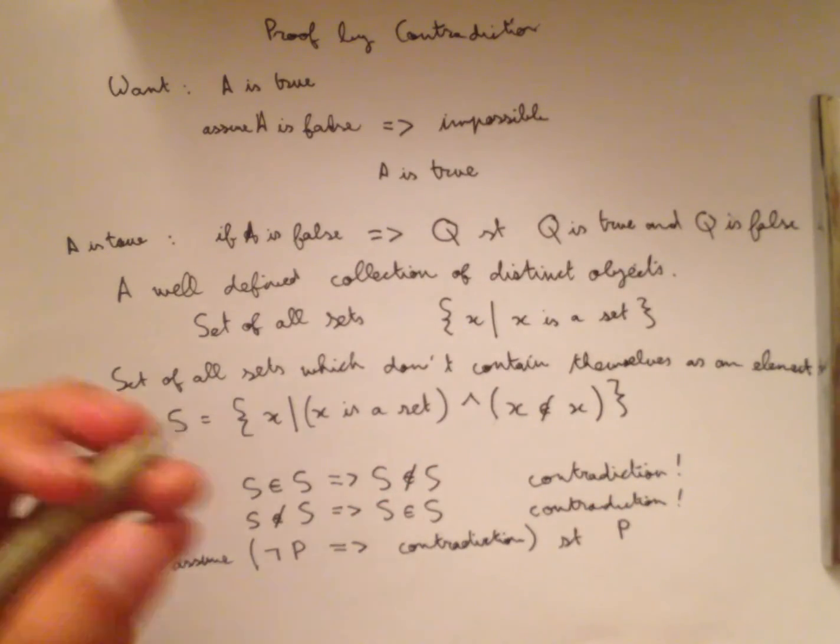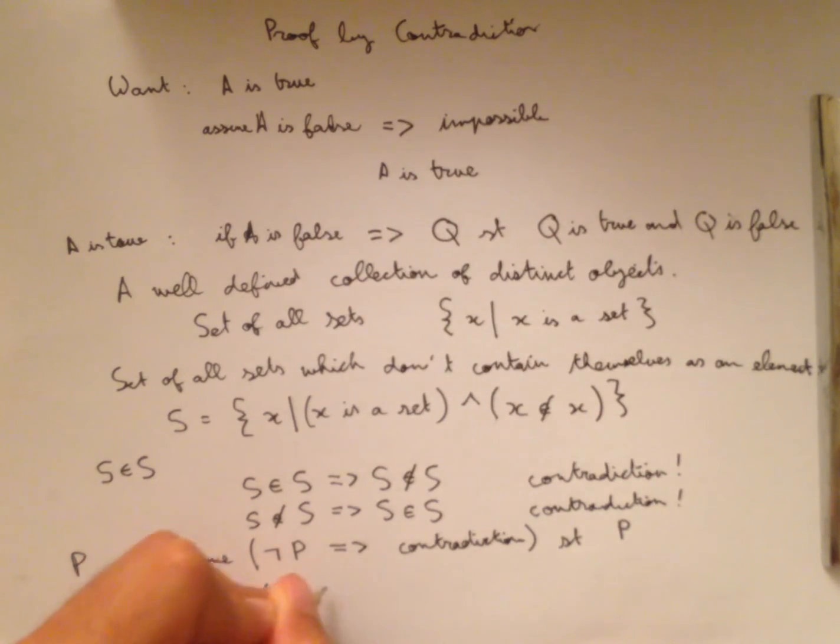But we can also do the same with P. So in this case, we would assume P, we show that this implies a contradiction. And this contradiction is just the same one that we derived here. Since we didn't need any assumptions to make it, we can make it happen anytime.